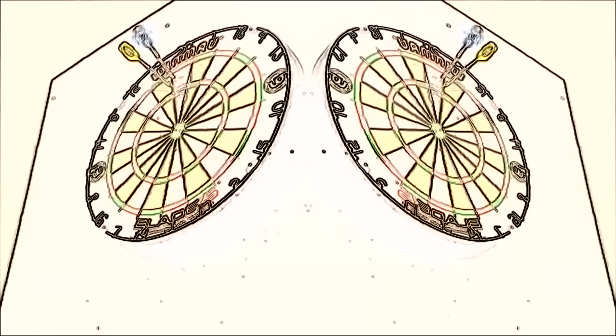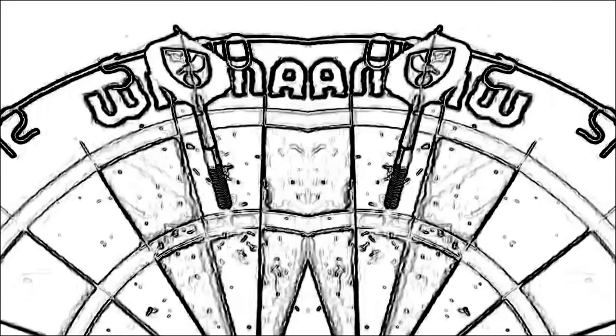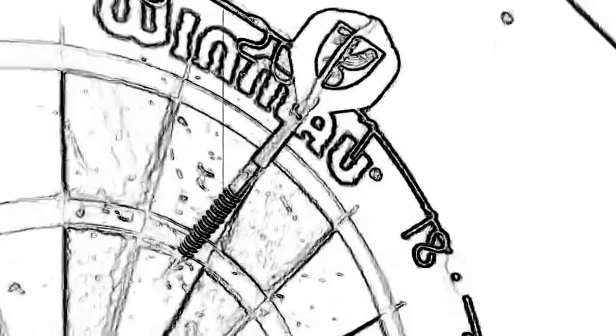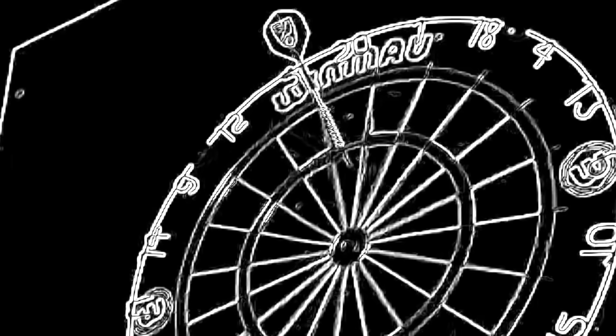So one problem with this simulation is that in real life, each dart throw isn't an independent event. So if you hit your target on your first dart, it's actually easier for your arm to follow the dart once you've already hit it. And also, darts can cover up targets, forcing you to switch. So hopefully these two factors will cancel each other out.